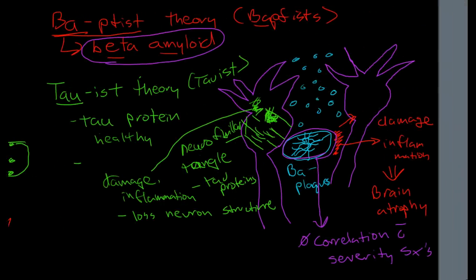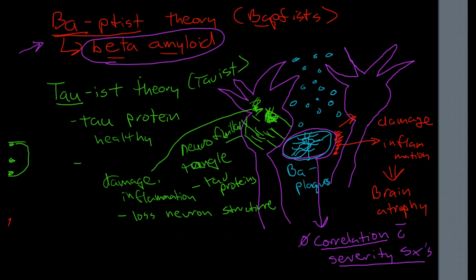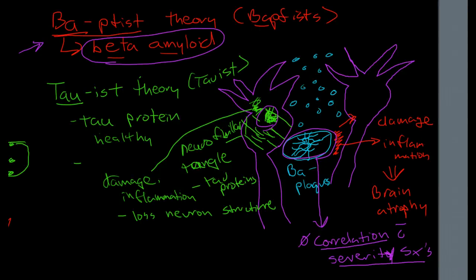Then there is the beta amyloid theory and that has to do with the deposition of beta amyloid plaques within the brains and again there is clear correlation between people with Alzheimer's disease almost exclusively always have beta amyloid plaques. However, the number of plaques does not correlate to the severity of symptoms and that makes people question whether this really plays a central causal role in the development of Alzheimer's disease. And then the third theory is the Taoist theory which relates to tau proteins accumulating within the neuron and causing damage to the neurons.